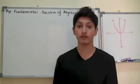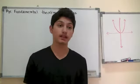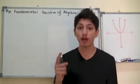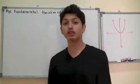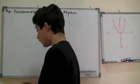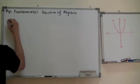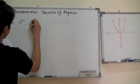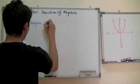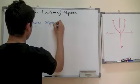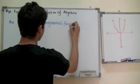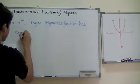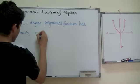So let's go ahead and talk about the Fundamental Theorem of Algebra. If you have f(x), a polynomial function of degree n, and n is greater than zero, then f has at least one zero in the complex number system. The rule is that an nth degree polynomial function has exactly n zeros.